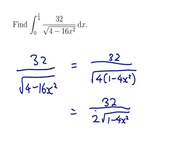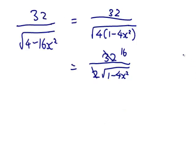And I can cancel that and make that a 16. So that's 16 over the square root of 1 minus 4x squared.